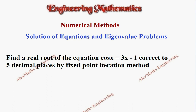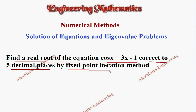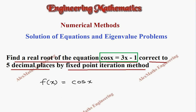Hi students, this is Alex. In this video we are going to find a real root of the equation cos x = 3x - 1 correct to 5 decimal places by the fixed point iteration method. From the given equation cos x = 3x - 1, we write f(x) = cos x - 3x + 1.